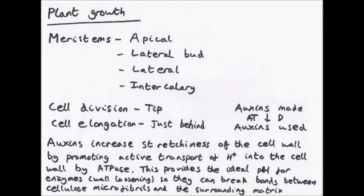Cell division generally happens at the tip of the plant, and cell elongation happens just behind that. So you get new cells forming and then they elongate. Auxins are produced at the apex — at the tip — and then travel down the plant to the cells in the zone of elongation, causing them to elongate. So auxins are made at the tip where cells divide and move down to the region behind the tip where cells elongate.